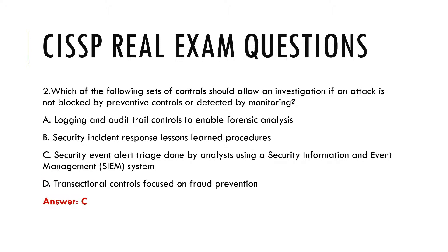Question 2. Which of the following sets of controls should allow an investigation if an attack is not blocked by preventive controls or detected by monitoring? a. Logging and audit trail controls to enable forensic analysis, b. Security incident response lessons learned procedures, c. Security event alert triage done by analysts using a security information and event management system, d. Transactional controls focused on fraud prevention. Answer: c.